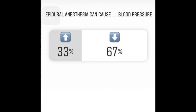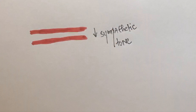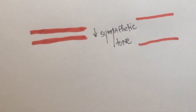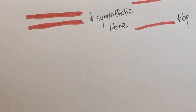Epidural anesthesia can cause a dash in blood pressure. The answer is a decrease in blood pressure. This is because epidural anesthesia blocks the sympathetic nerves that are responsible for vascular tone. This causes vasodilation and hence decreases the blood pressure.